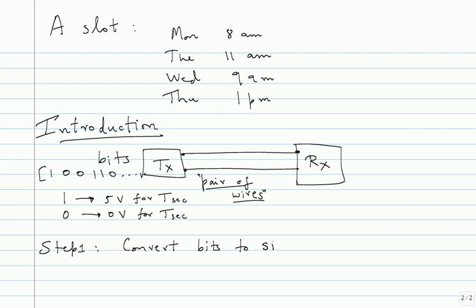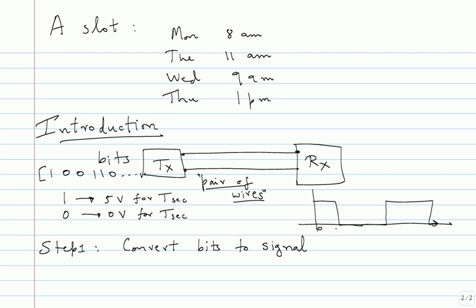Convert bits to signal — a voltage waveform or current waveform. For instance, with the bit sequence 1, 0, 0, 1, 1, 0 using bit 1 → 5 volts and bit 0 → 0 volts, the waveform will look like a rectangular waveform: at time T, 2T, 3T, 4T and so on, with a level of 5 volts. When you build electrical systems, there are many things you have to worry about in a signal.